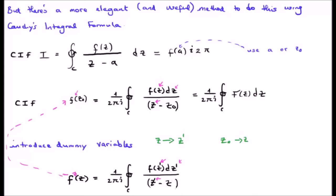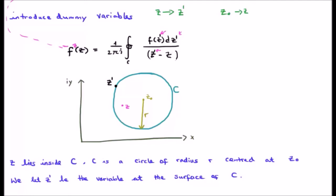Truth be told, we want f of z. We don't want f of z prime. But we're using this dummy variable z prime in order to get at f of z and later to actually get at the pole z zero. Why do we do it? z lies inside the circle c. C is a circle of radius r centered at the pole at z zero. We let z prime be a variable at the surface of c.